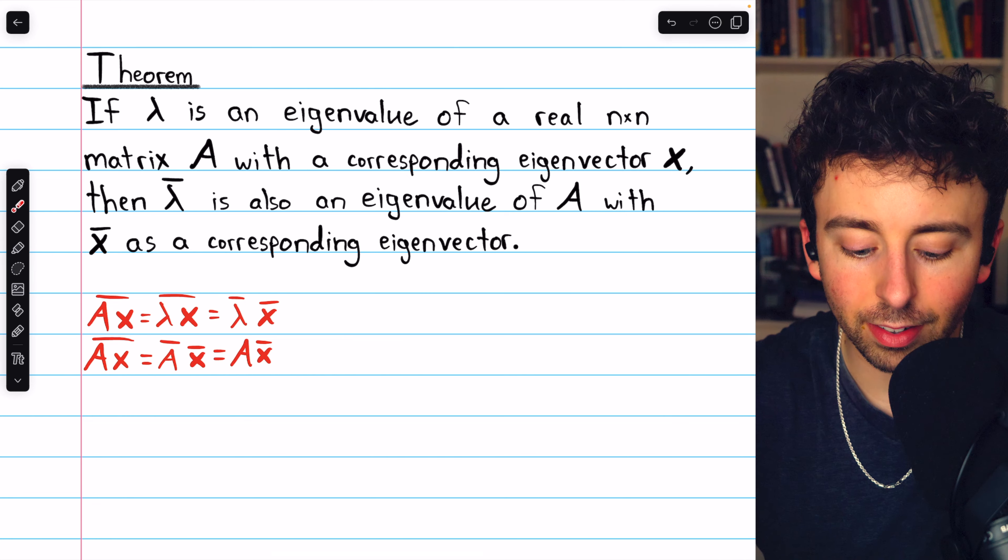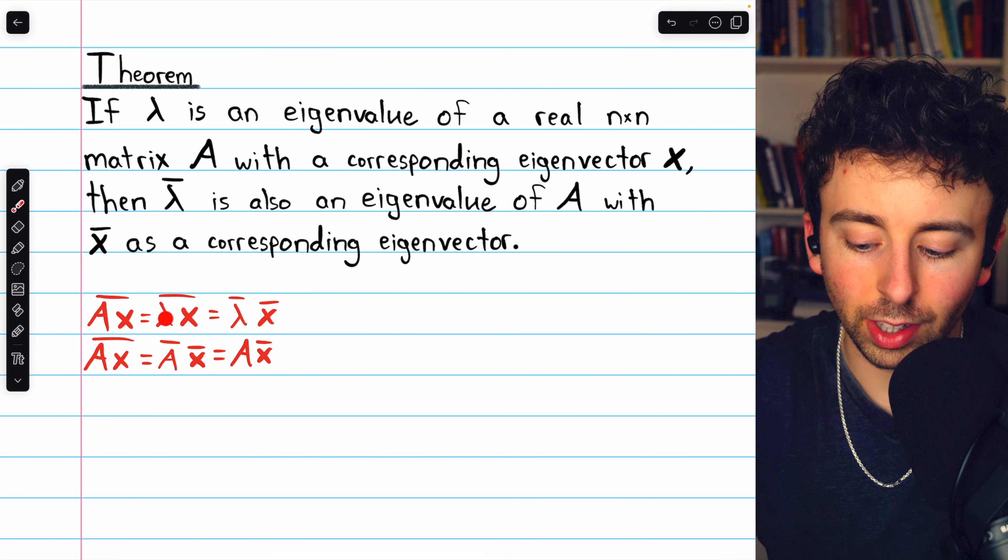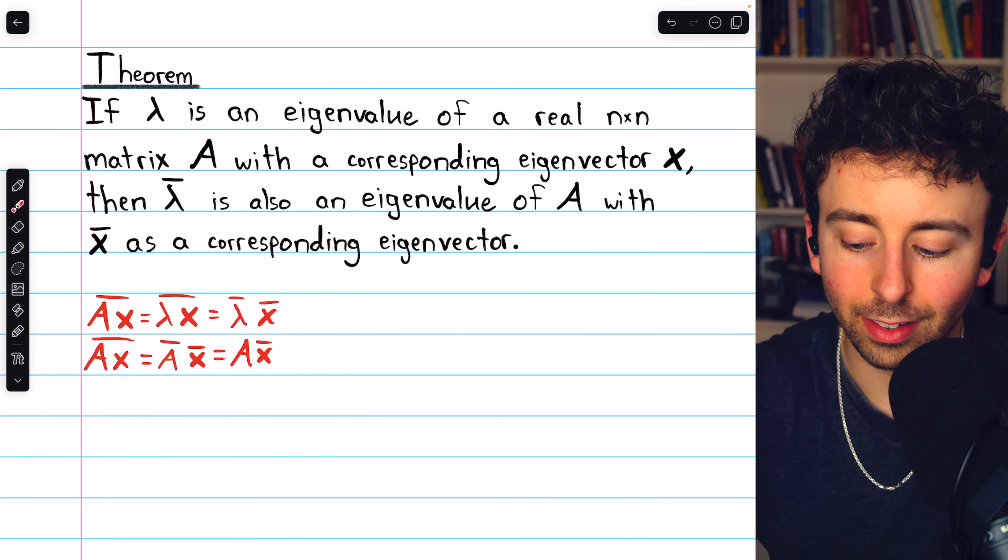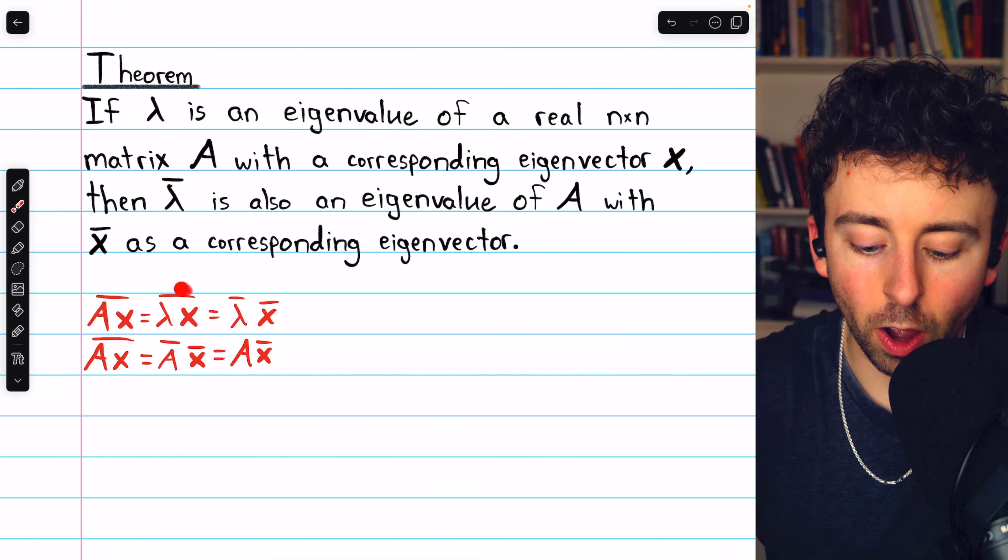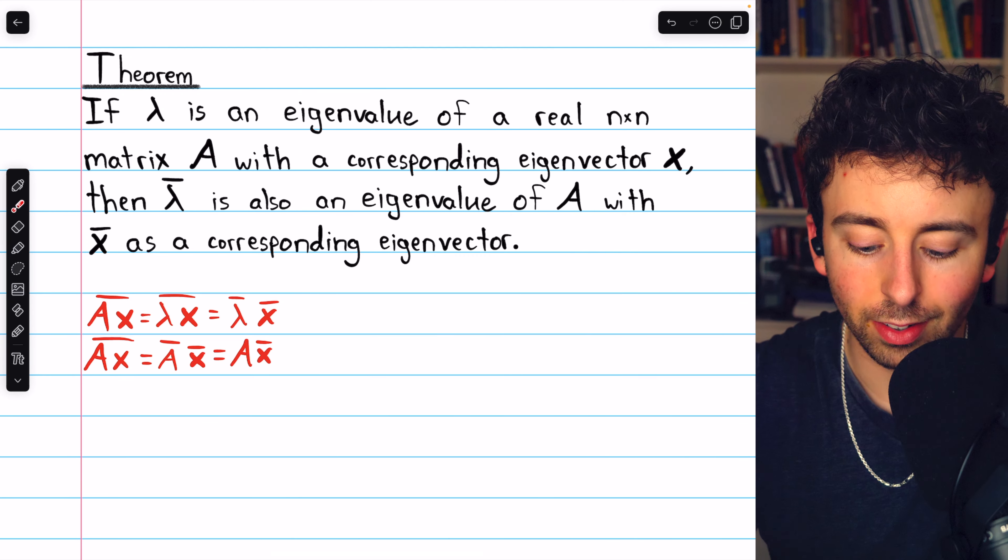If we take the conjugate of A times X, well, A times X is just lambda times X, because X is an eigenvector corresponding to lambda, and then the conjugate of that we know is the same as the product of their conjugates. So, lambda conjugate times X conjugate.